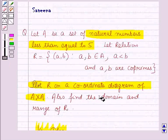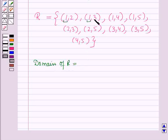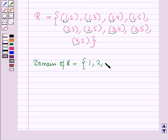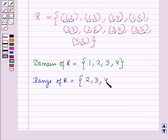Next, we have to find the domain and range of R. The domain of R is equal to the set containing the first components of these ordered pairs, which is the set containing the elements 1, 2, 3, and 4. The range of R is the set of second components of these ordered pairs, which is equal to the set containing the elements 2, 3, 4, and 5.